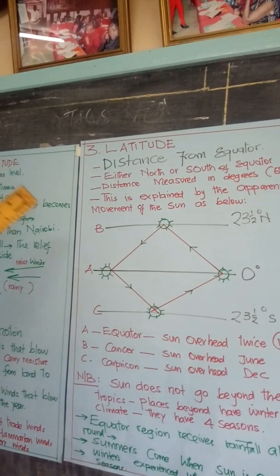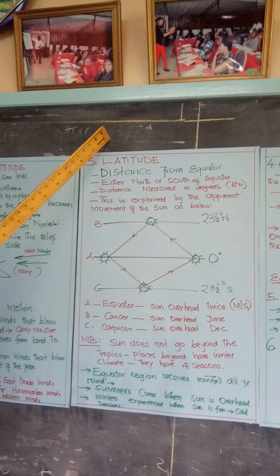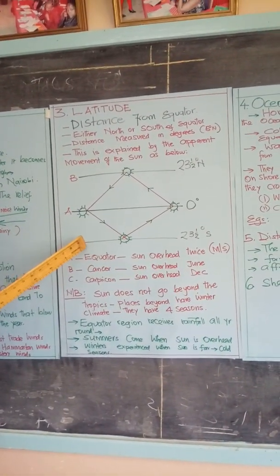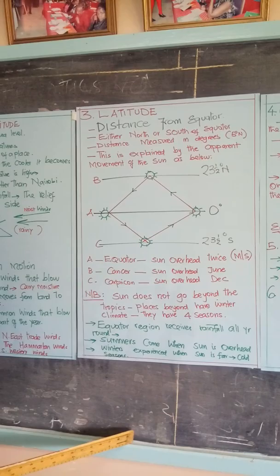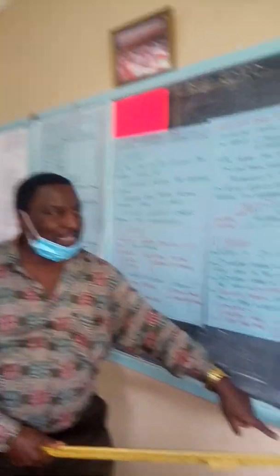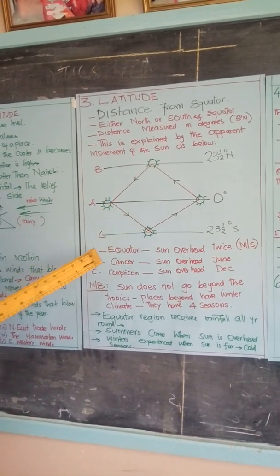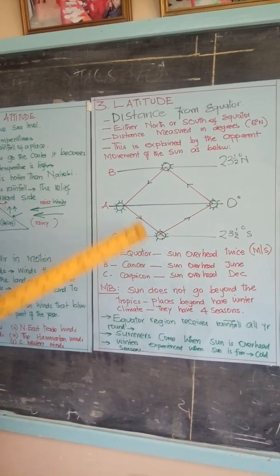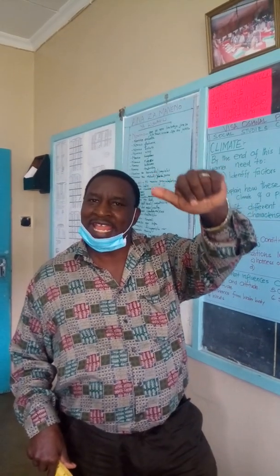This is the equator. To the north we have 23.5 degrees north. If you go up further, Russia ends at 66 degrees north. To the south we have the Tropic of Capricorn at 23.5 degrees south. If you go down further, we have the poles — the north pole and the south pole. But the sun does not go beyond 23.5 degrees south or 23.5 degrees north. This is the area we call the tropics. If you go beyond the tropics, you will have four seasons: winter, summer, autumn, and spring.